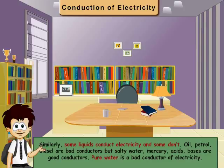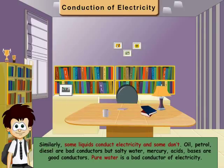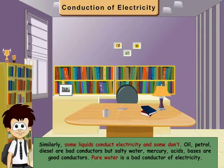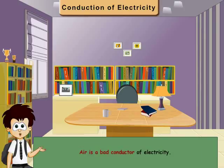Similarly, some liquids conduct electricity and some don't. Oil, petrol, diesel are bad conductors, but salty water, mercury, acids, bases are good conductors. Pure water is a bad conductor of electricity. Air is a bad conductor of electricity.